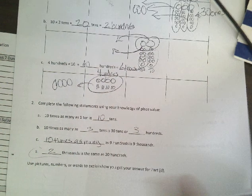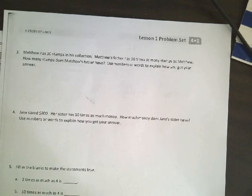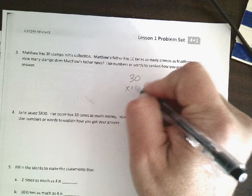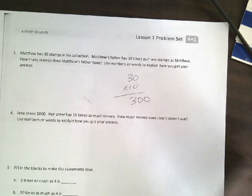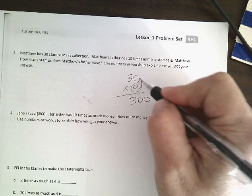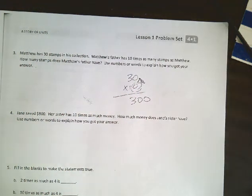On the back side, Matthew has 30 stamps in his collection. Matthew's father has 10 times as many, so 10 times 30 is 300. I told the students today when you're multiplying by 10, all you're doing is taking that zero and putting it behind the original number and you're getting your answer.